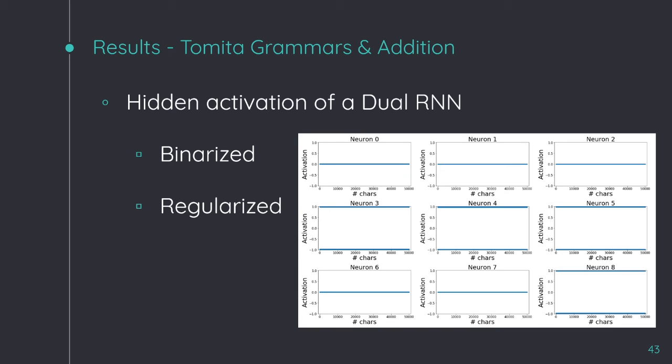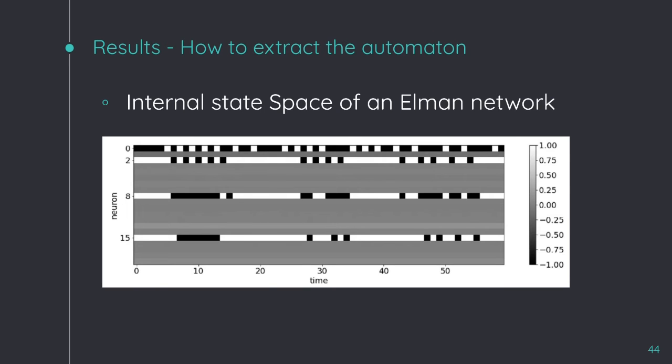In this figure, I show you the recurrent activation of the dual network when it is trained on the Tomita 6 grammar. Look that neurons 0, 1, 2, 6, and 7 are regularized. I mean, their activation are always 0. So, we can discard them because they are turned off. On the other hand, look that neurons 3, 4, 5, and 8 are fully binarized, being minus 1 or 1. With these neurons' activities, we can perform the rule extraction and directly get the automaton.